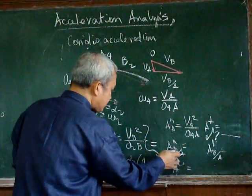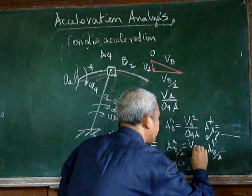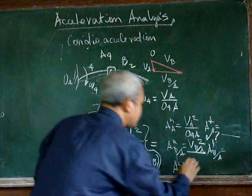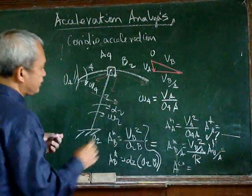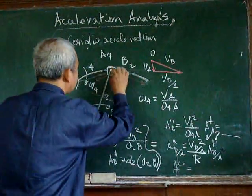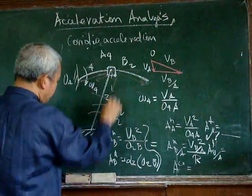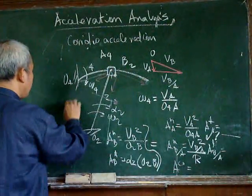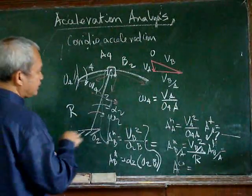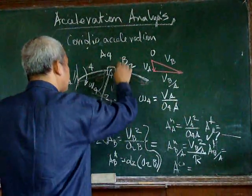The normal acceleration of b with respect to a equals the velocity of b with respect to a squared over a certain radius. That radius is the radius of curvature of the path, which we can determine from that point up to that point. So we have the radius.